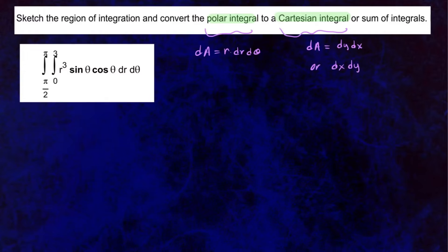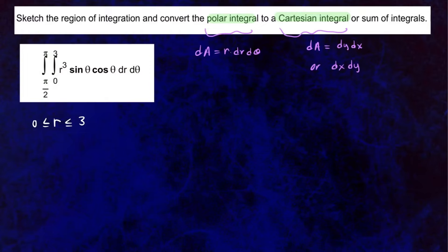Since we're integrating with respect to r first, these are the limits of integration for r, and theta is the outer integral. So those are the limits for theta. Let's clearly write them out: r is going from 0 to 3, and theta ranges from π/2 to π.